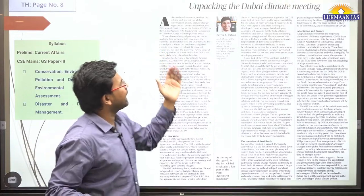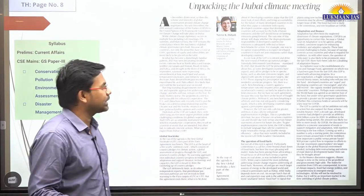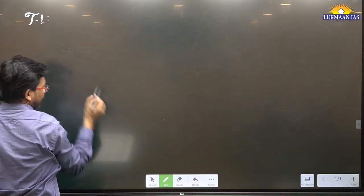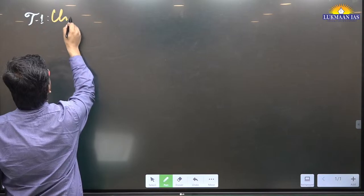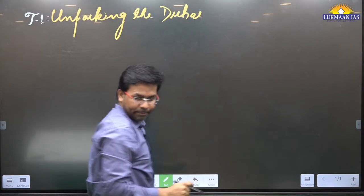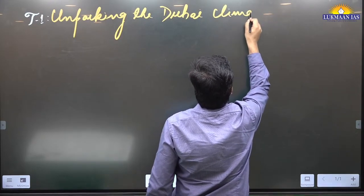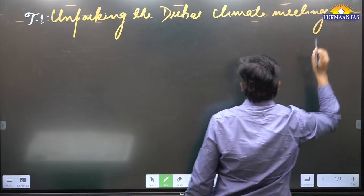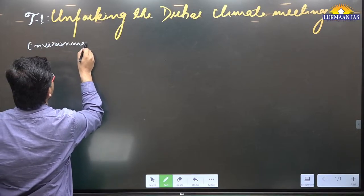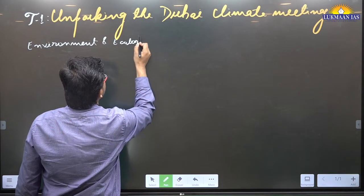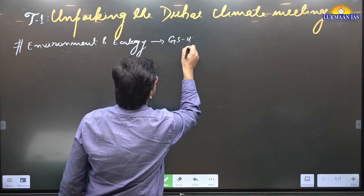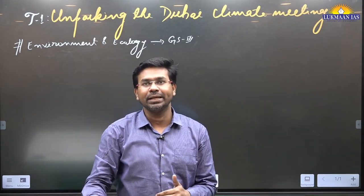Topic one is 'Unpacking the Dubai Climate Meeting.' This topic is very important from the viewpoint of environment and ecology. It is important for the prelims exam and also for the mains exam under GS Paper 3.